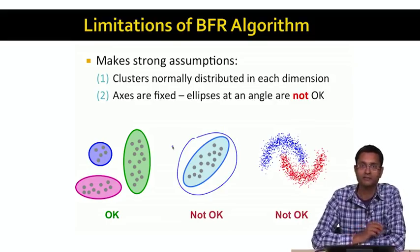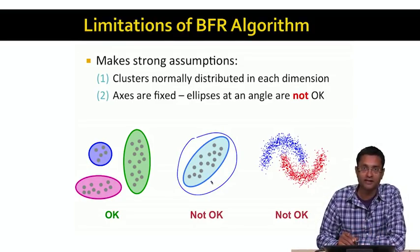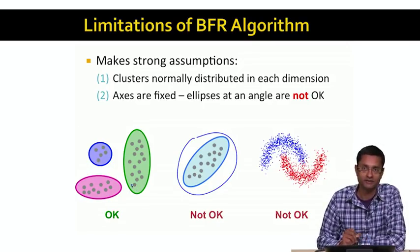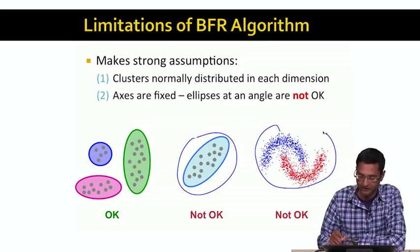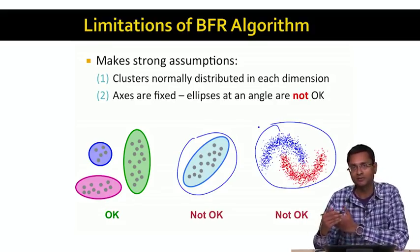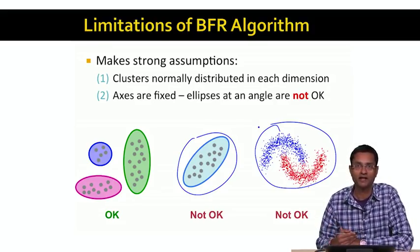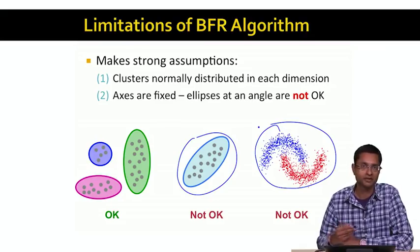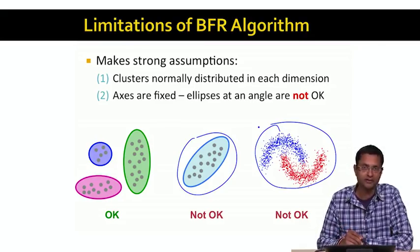The BFR algorithm will not find a cluster that looks like a tilted ellipse. It can only find clusters that look like either upright or horizontal ellipses. And if your clusters actually look very different — like the picture on the extreme right, where there are two clusters that look like crescent moons in opposite directions — those will definitely not be found by the BFR algorithm, because they don't look like ellipses at all in any dimension. So that's the kind of cluster that will never be found by the BFR algorithm.